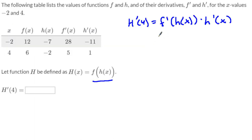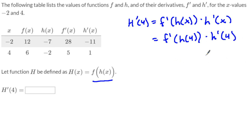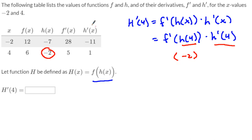So we're going to use the Chain Rule. Now I can plug 4 in for x, which means I have f prime of h of 4 times h prime of 4. Now I'm going to look at my table. Do you see how I know what h of 4 is? I have h of 4 — that's negative 2. So this equals negative 2 right in there. And h prime of 4, you look on the table — h prime of 4 is equal to 1. So I'm multiplying by 1.